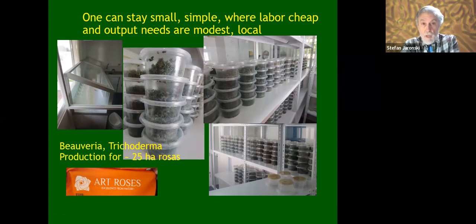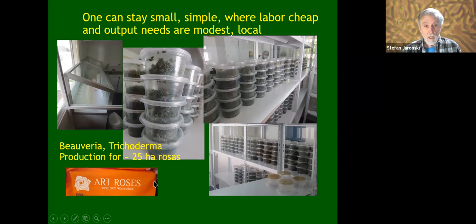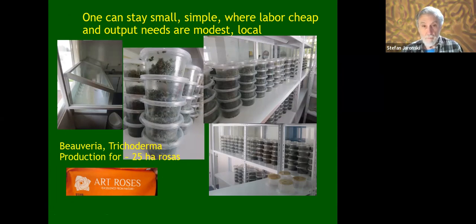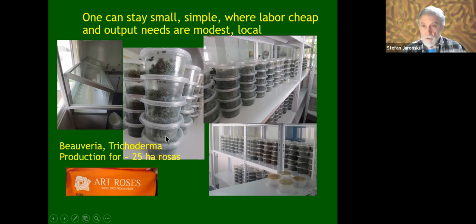One can stay small and simple where labor is cheap and output needs are very modest. This is an actual production operation for Trichoderma and Beauveria for a company called Art Roses, which produces roses primarily for Eastern Europe. They make their own Beauveria and Metarhizium using delicatessen cups — sterilizing the cups by exposing them to ultraviolet light, then inoculating rice with spores of Beauveria, Metarhizium, or Trichoderma. This is how they produce on an insufficient scale for their own operation.